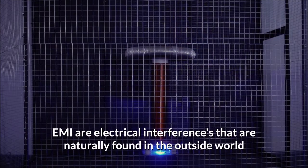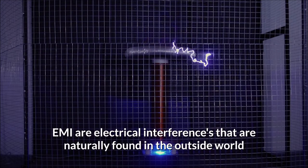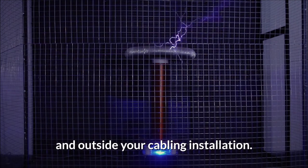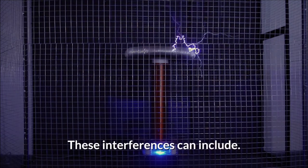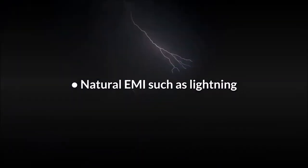EMI are electrical interferences that are naturally found in the outside world and outside your cabling installation. These interferences can include natural EMI such as lightning, storms, and natural electrical charges.